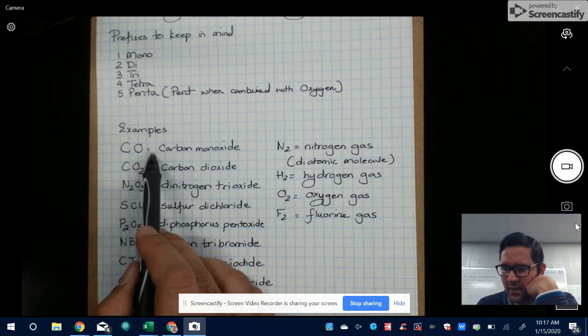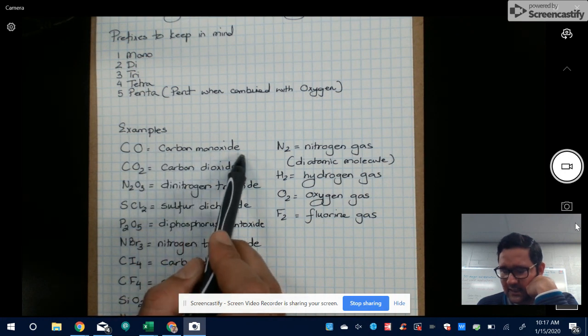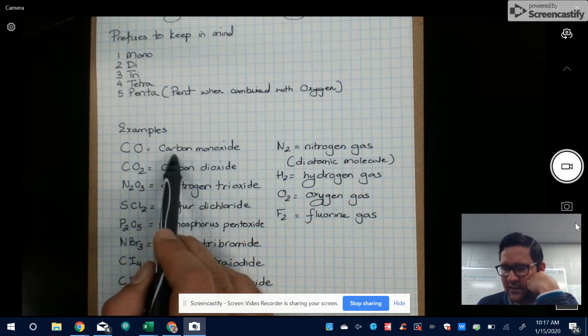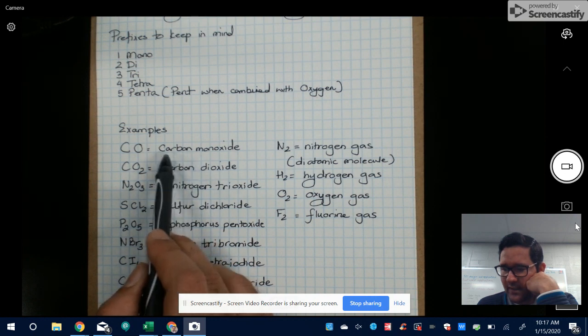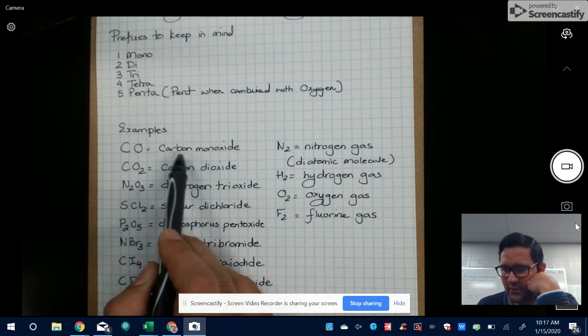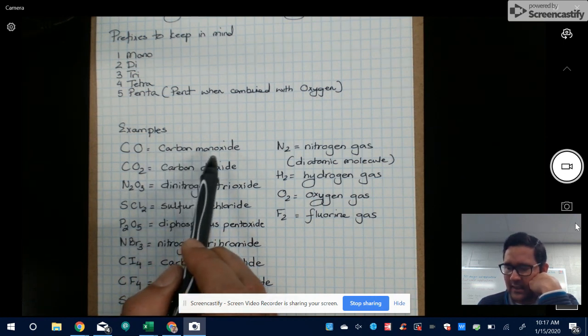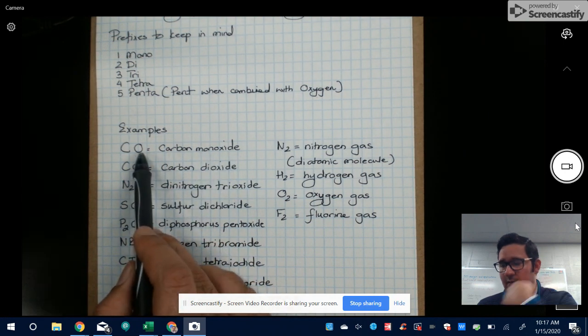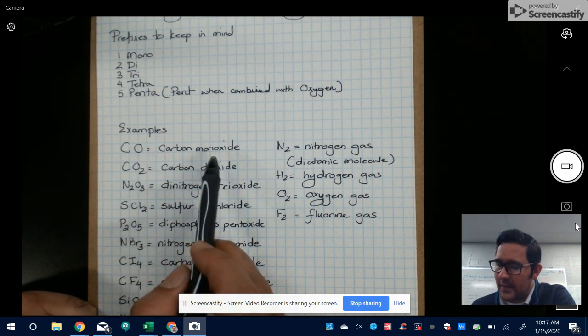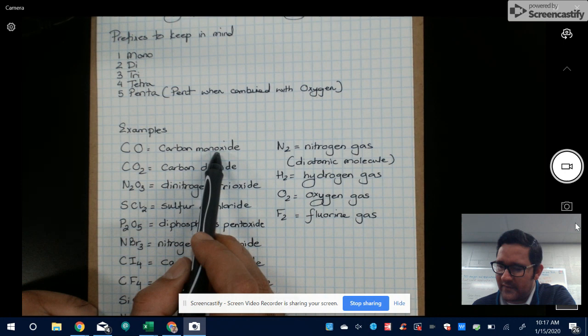You're not going to say monocarbon monoxide. For the first element, if it's just one of them, you don't have to put down mono. You can just say carbon. But for the second element, if there's just one element in the compound, then you definitely want to use the prefix mono.